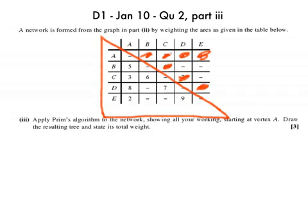Okay, so first step, what do we do? If we look at the question it asks us to start at vertex A, so I circle that. I scan the row and there's a 5, a 3, an 8, and a 2. And I circle the least value, so I circle the 2.